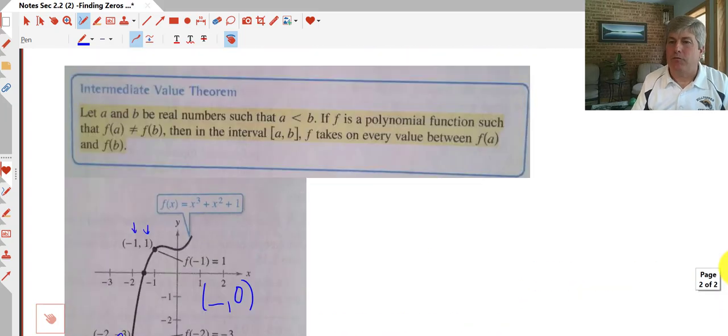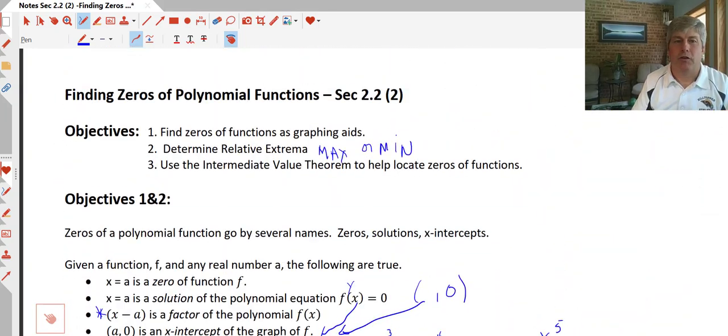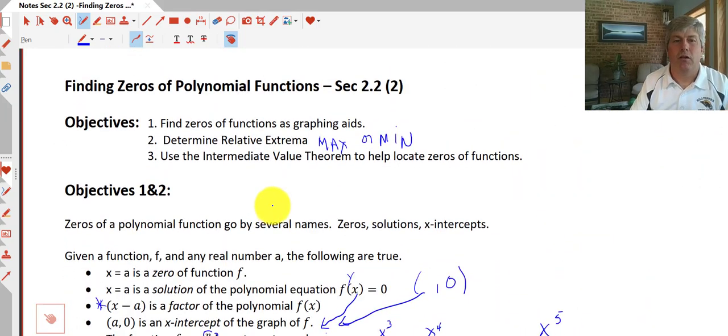So I think we've achieved our objectives of this particular video. We've found the zeros. We used our graphing calculator to help us out. We've introduced relative max and min. And saw how the intermediate value theorem can help us locate zeros. And we'll get more practice with this when I see you in class.